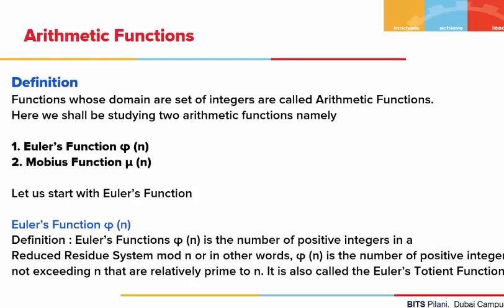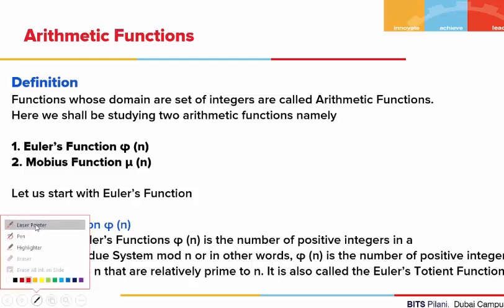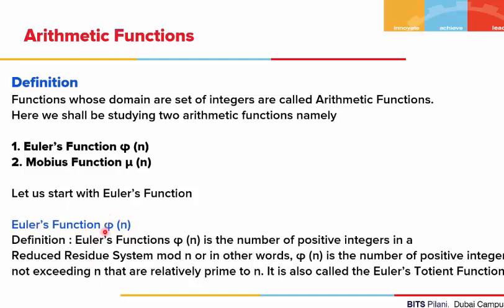Let us start with the Euler's function, denoted by phi of n. Phi of n is nothing but the number of positive integers in a reduced residue system mod of n. In other words, phi(n) gives us the number of positive integers not exceeding n that are relatively prime to n. It is also called the Euler's Totient function.